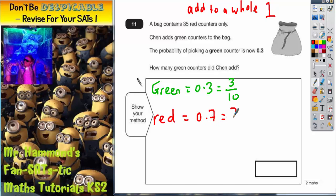So red must be 0.7, which is 7 tenths. But we do actually have some more information about the red counters. We are told that there are 35 red counters. Chen's not added any more red counters, so there are still 35 red counters.